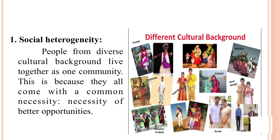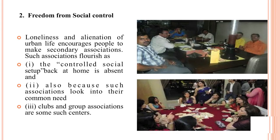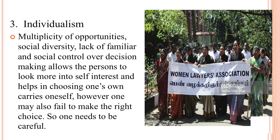First is social heterogeneity — people from diverse cultural backgrounds live together as one community, because they all come with a common necessity for better opportunities. Second, freedom from social control — loneliness and alienation of urban life encourages people to form secondary associations, as the controlled social setup back home is absent and such associations address common needs. Individualism, multiplicity of opportunities, social diversity, and lack of familiar social control over decision-making allow persons to focus more on self-interest and help in choosing one's own career.